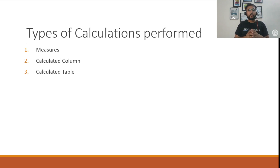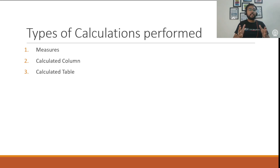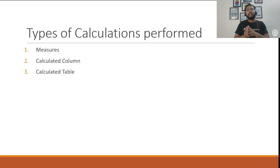Let's start with measures. A measure can be defined as an aggregation or calculation which is performed at the dataset level. For example, we have a table called 'Sales' where every record represents a sales transaction. To calculate the total sales of the company, we take the aggregation of the sales column — that gives us a measure called 'Total Sales'. Similarly, we can create a measure using a DAX equation to count the total number of orders received.